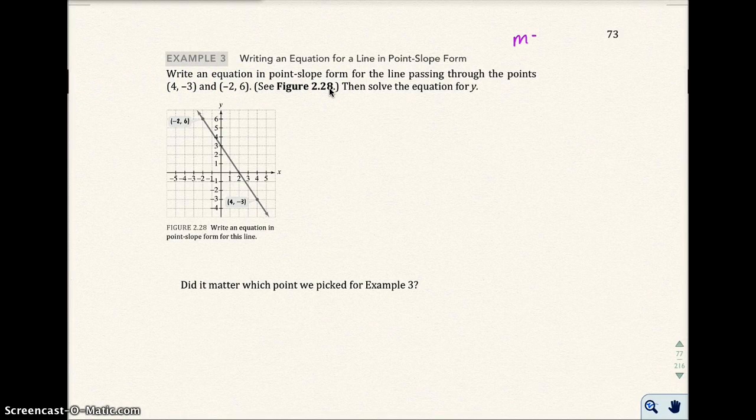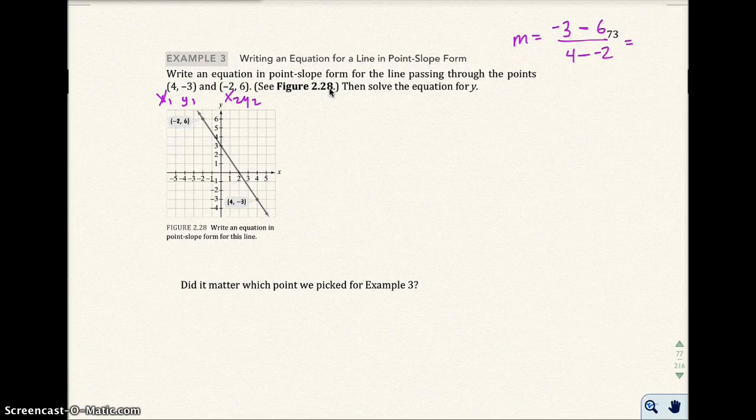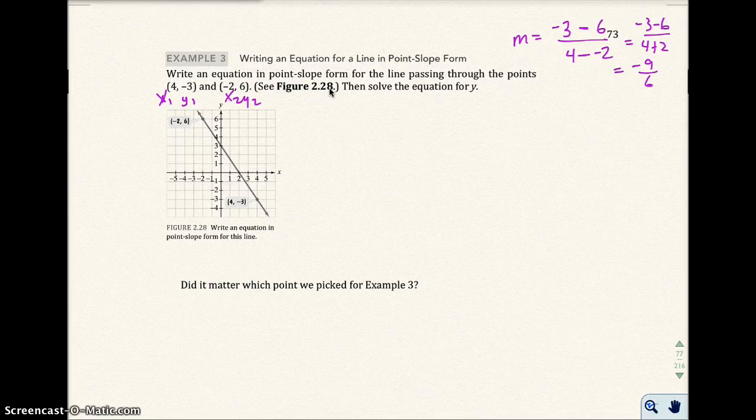So we can say m equals, and then here's x1, y1, x2, y2, or vice versa. And I'm going to get -3 minus 6 all over 4 minus a negative 2, which is -3 minus 6 over 4 plus 2. I get -9 over 6. Remember that if you have a fraction, you can always reduce it if you need to. So this is the same thing as -3 over 2, and there's the slope.